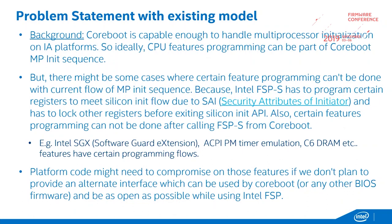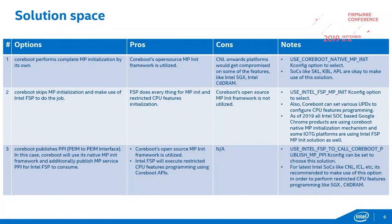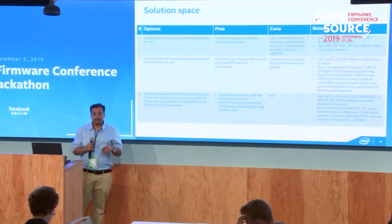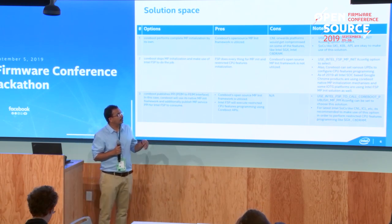To have these features and keep things open source, a couple of solutions were on the table. Option one: coreboot does the MP initialization — coreboot has a very good open-source MP init flow. But the problem is from Canon Lake onwards, we can't enable SGX or C6 DRAM if we do MP init before calling FSPS, because FSPS has to lock certain registers. Option two: coreboot skips its own MP init and lets FSPS do all the work, including restricted CPU feature programming. But then we lose coreboot's open-source MP init flow.